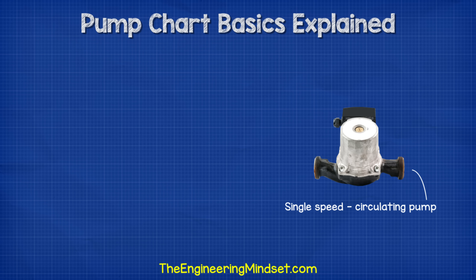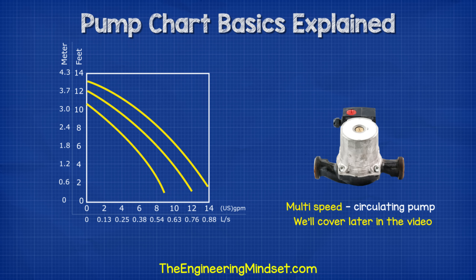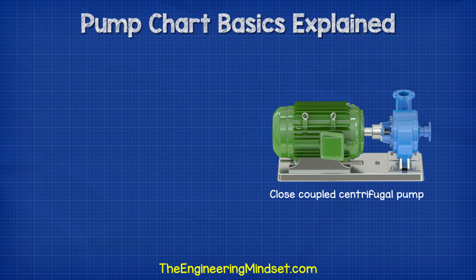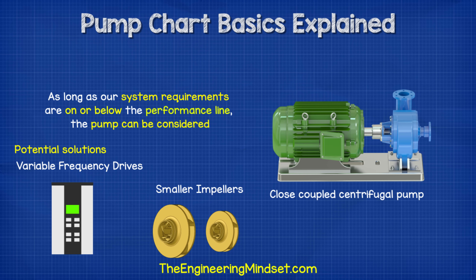When selecting a circulating pump, the pump will only perform as per the line. So for this model, if we wanted 8 gallons per minute, then we would have 6 foot of head. You can also get multi-speed circulating pumps which we'll look at later on in this video. When selecting a larger centrifugal pump, as long as our system requirements are on or below the performance line, then the pump can be considered. We can potentially use a smaller impeller or variable frequency drive to better suit our requirements, and we're going to look at that a little later in this video.